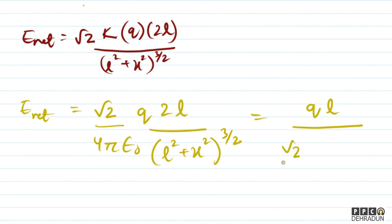If we simplify, root 2 times 2 gives us the final answer: q L divided by root 2 pi epsilon 0 times L squared plus x squared to the power 3 by 2.